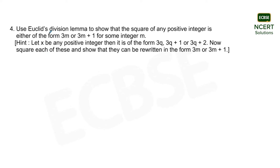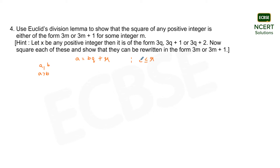We know Euclid's Division Algorithm says a equals bq plus r, where a and b are some integers such that a is greater than b. This means that if we divide the number a by the number b, then q is obtained as the quotient and r is obtained as the remainder. The variable r can take values such that r is greater than or equal to 0 but less than b, that is, less than the divisor.